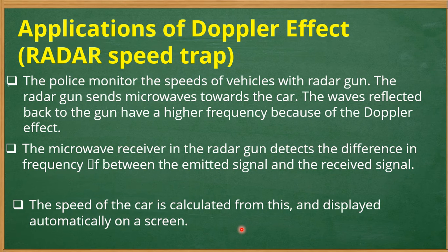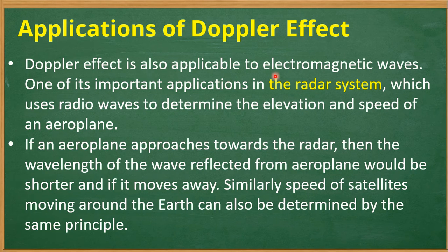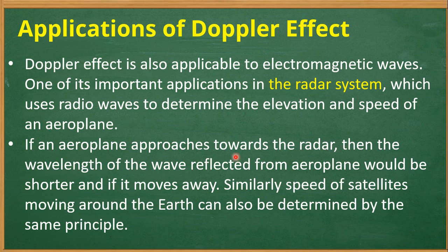The Doppler effect is also applicable to electromagnetic waves. One of its important applications is in the radar system, which uses radio waves to determine the elevation and speed of an aeroplane. If an aeroplane approaches toward the radar, the wavelength of the wave reflected from the aeroplane would be shorter, and if it moves away, the wavelength would be longer. Similarly, the speed of a satellite moving around the Earth can also be determined by the same principle.